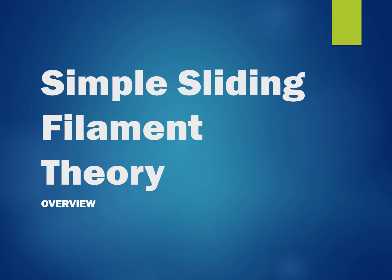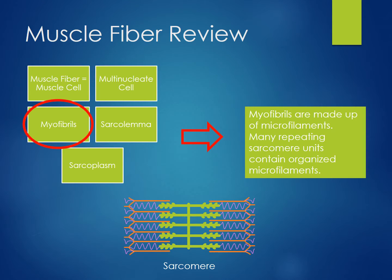This video will give a simple overview of the sliding filament theory for skeletal muscle. As a quick review, muscle fibers contain many myofibrils. Myofibrils contain microfilaments. Microfilaments make up many repeating units of the same structure. This basic structure is called a sarcomere.